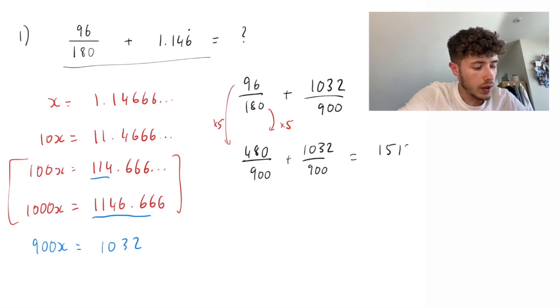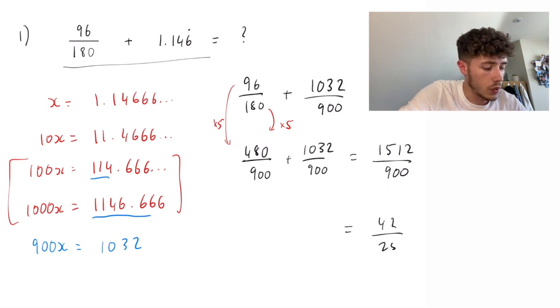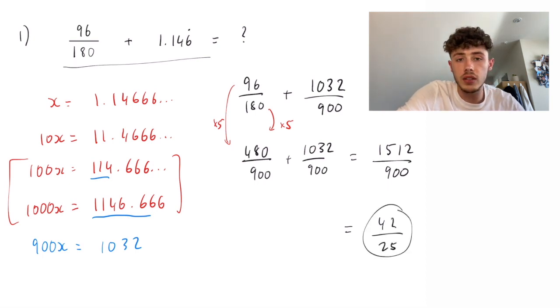And from here, we can actually simplify. So, 1512 and 900 can go down to 42 over 25. And that is our final answer.